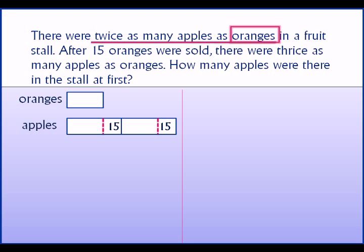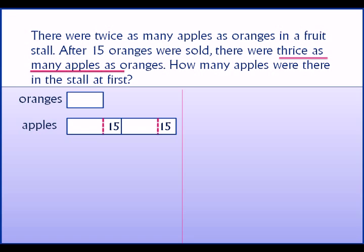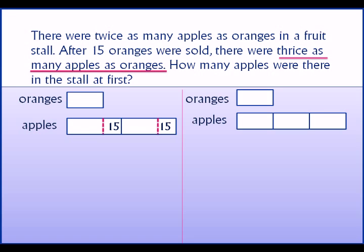The number of oranges sold is 15. At the end, there are thrice as many apples as oranges, meaning that if what you see here in oranges is one unit, then apples should have three such units. The diagram shows the representation — apples is three times as much as oranges.